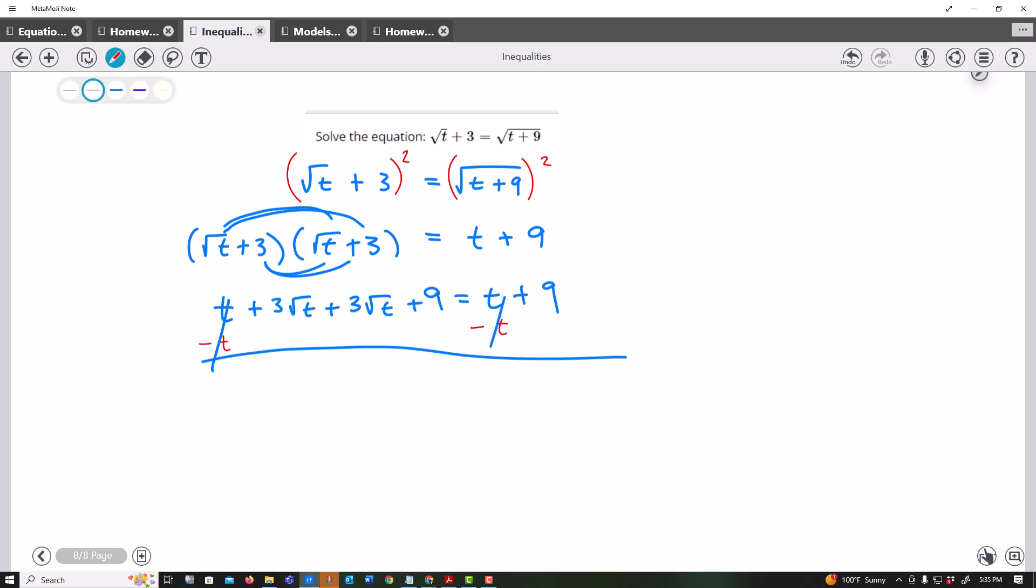Let's say I even subtract 9, so that cancels out. So what I end up with are these two, which is 6 square roots of t equals on this side, 0.